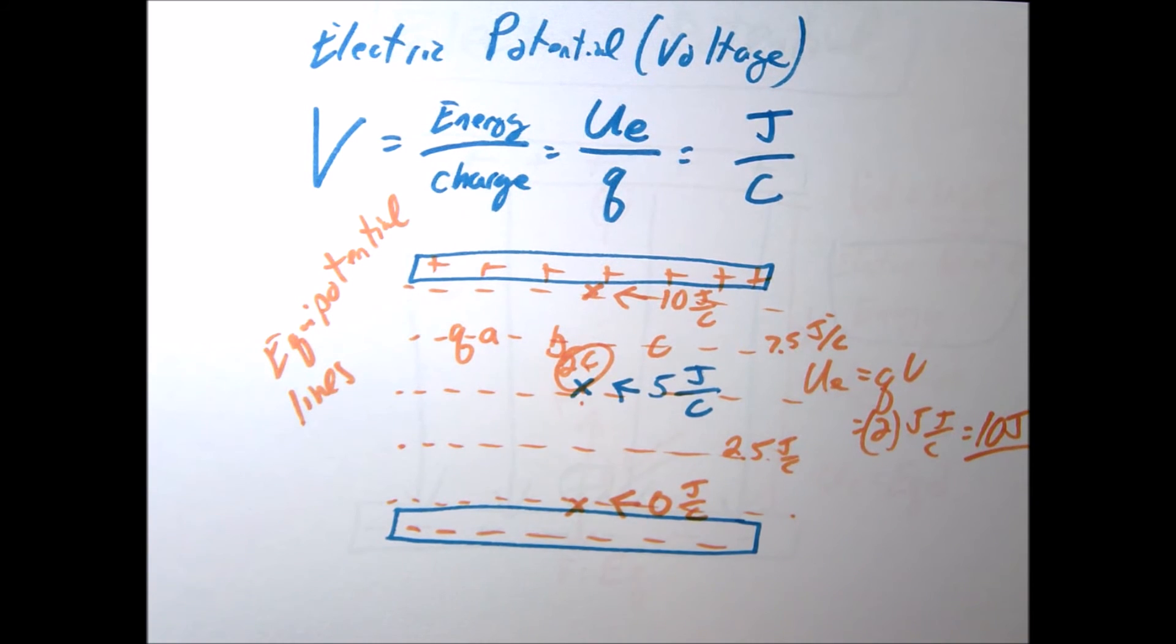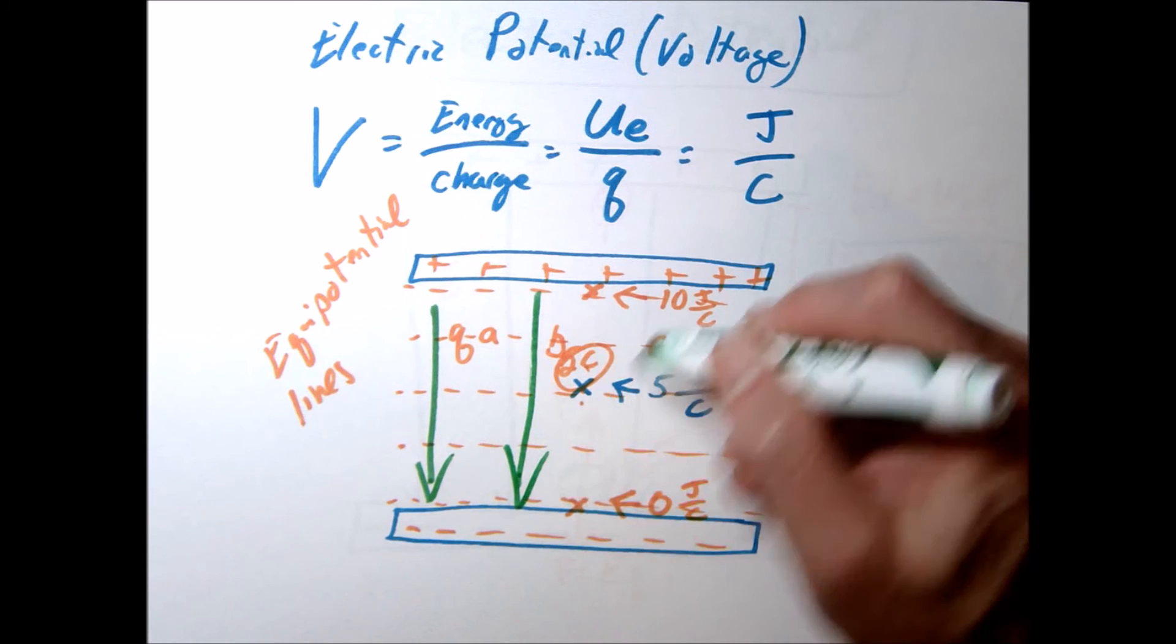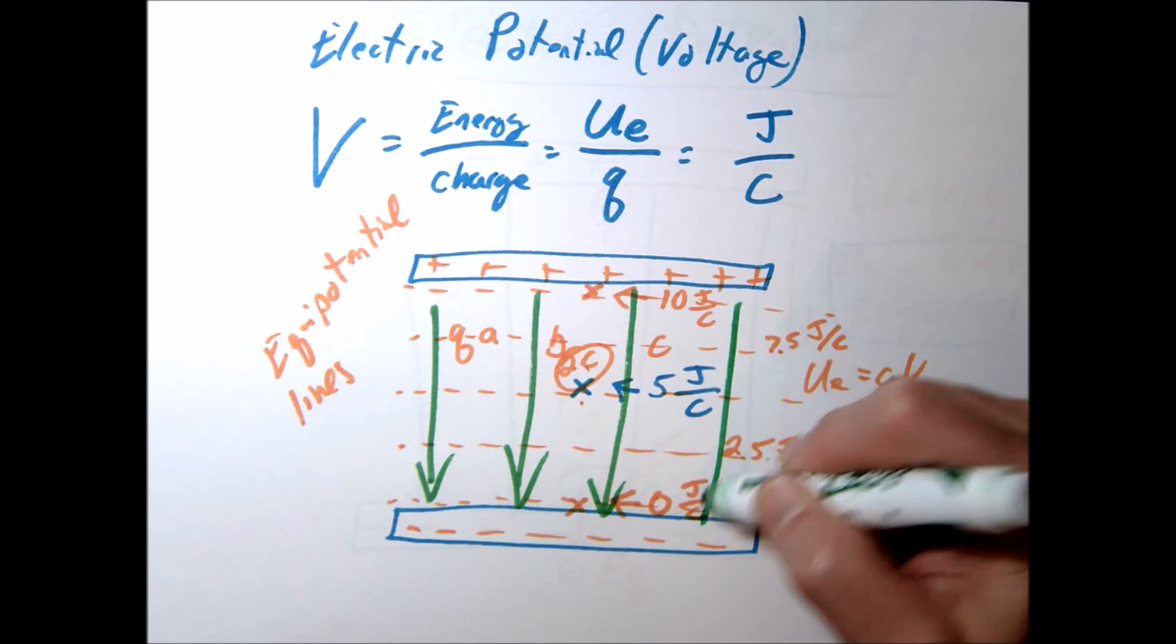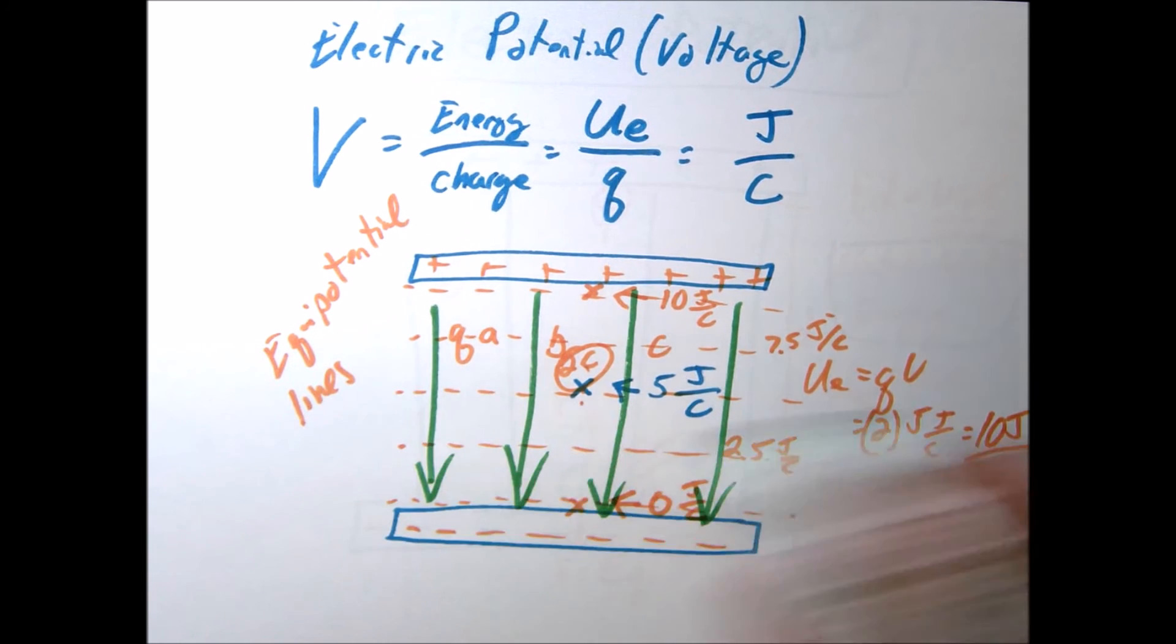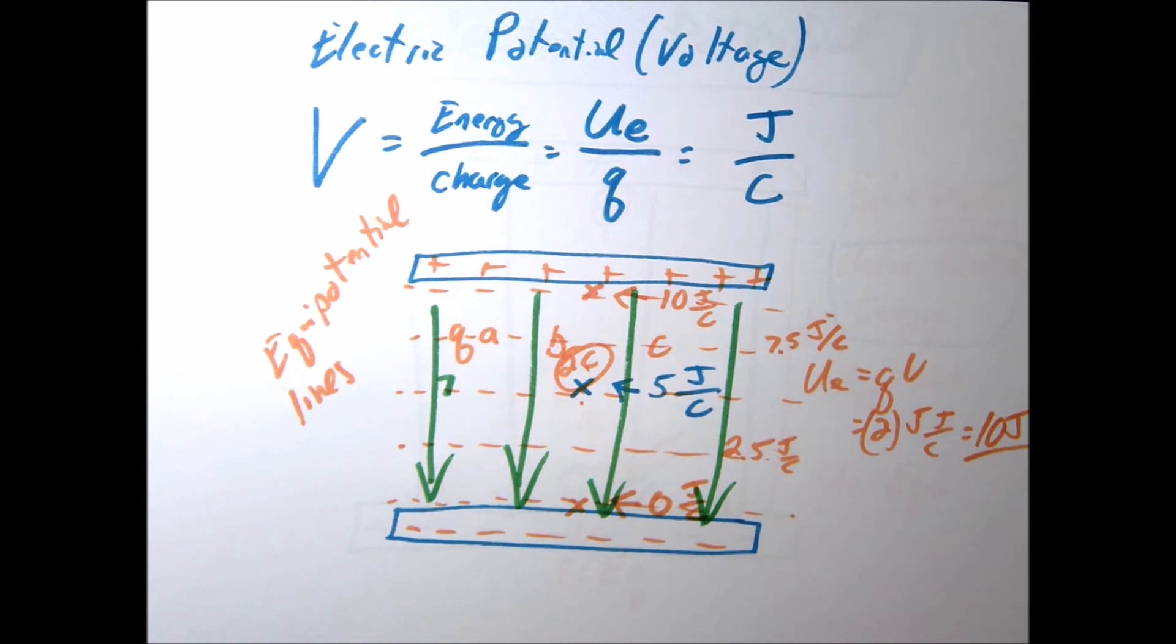Notice if I were to draw in my electric field, the electric field is always perpendicular to the equipotential lines. They're always going to be perpendicular to each other. We'll get more into that in a future lesson.